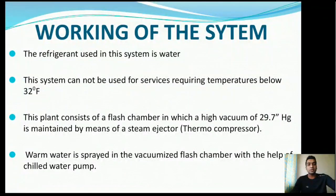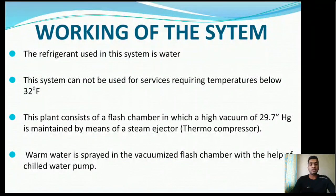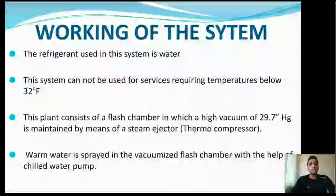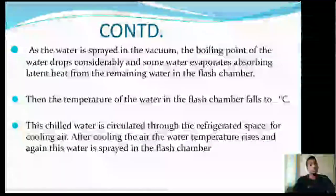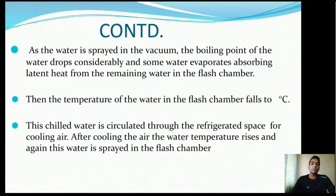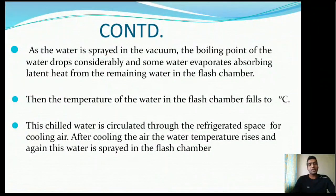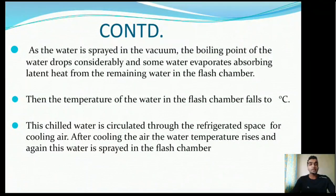After cooling the refrigerated space, the water temperature rises and this warm water is sent back to the flash chamber, and the cycle repeats. The refrigerant used is water, and the system cannot be used where temperatures below 0°C (32°F) are required. The flash chamber maintains a high vacuum of 29.7 inches by means of the steam ejector. Warm water is sprayed in the vacuumized chamber, its boiling point drops, some water evaporates absorbing latent heat from the remaining water, lowering its temperature. The chilled water circulates to the refrigerated space, and this is how the refrigeration effect is achieved.